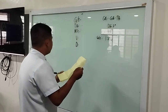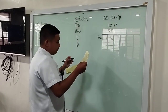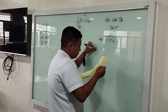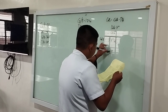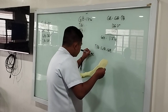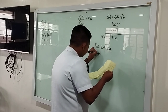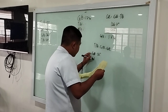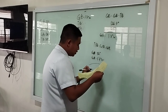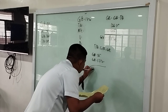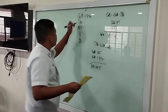Now we need to get our true heading. We take gyro heading minus gyro error: 32 degrees minus 1.7 degrees West. The total is our true heading: 30.3 degrees.